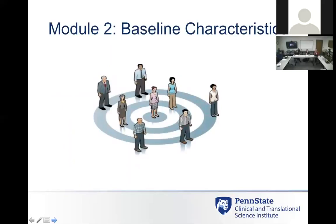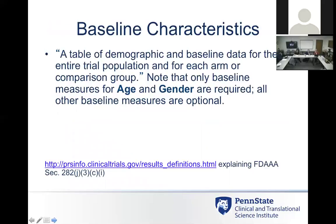Module two outlines the baseline characteristics of your population. You're looking at demographic and baseline data for your trial population in each arm — either the control or the treatment arm. The registry mandates that age and gender are completed for the population; everything else is optional. If you collect other demographics, you can add them, but you must include age and gender.